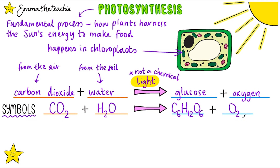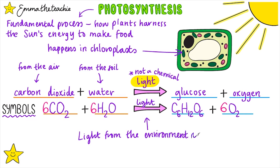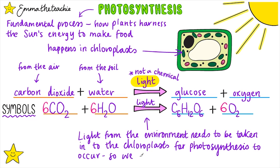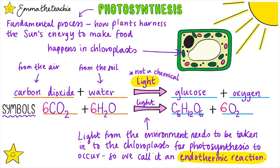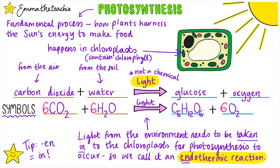It isn't on the spec, but if you want to practice some chemistry skills, pause the video and try to balance this equation. We just put a 6 in front of everything that isn't glucose. Because light from the environment needs to be taken into the chloroplasts for photosynthesis to occur, we can describe it as an endothermic reaction — that's an important phrase to learn. It's endothermic because 'en' means in and light needs to be taken in. Just a reminder that the chloroplasts contain chlorophyll, the green pigment, which is what's actually absorbing the light.